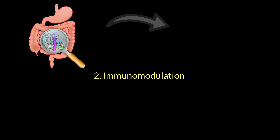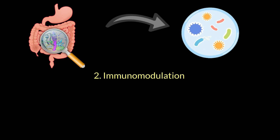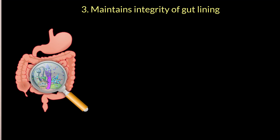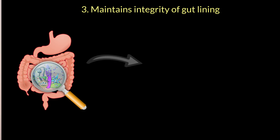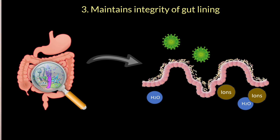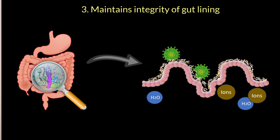Number two, these microbes play a role in immunomodulation, which means they either enhance or reduce our body's immune response depending on what a particular situation demands. Number three, our gut microbiota helps in maintaining good structural integrity of the gut. Good gut lining is important to allow the passage of water, ions and nutrients through the gut, but to restrict the entry of bacteria and pathogens.